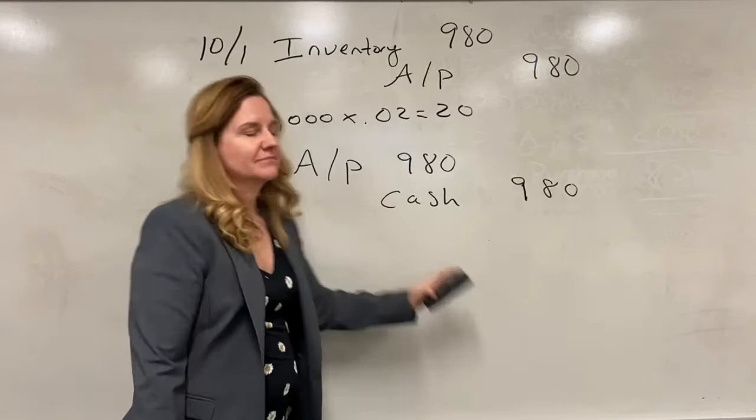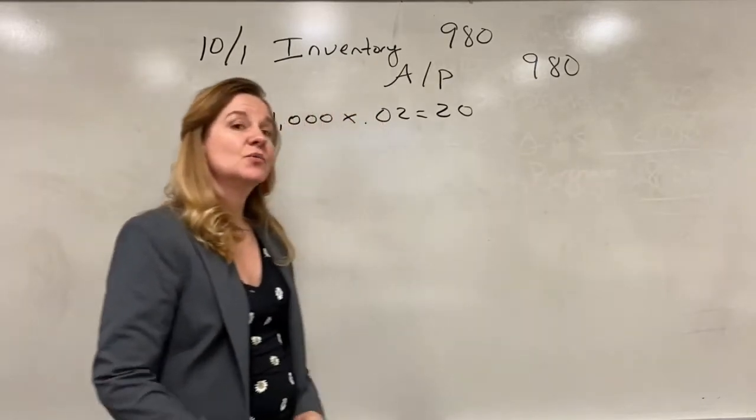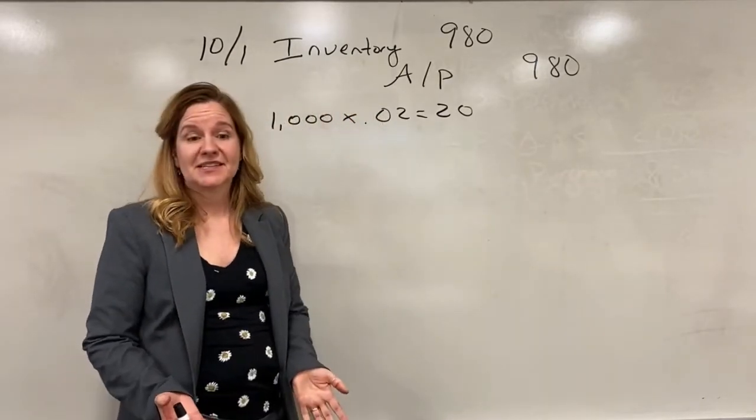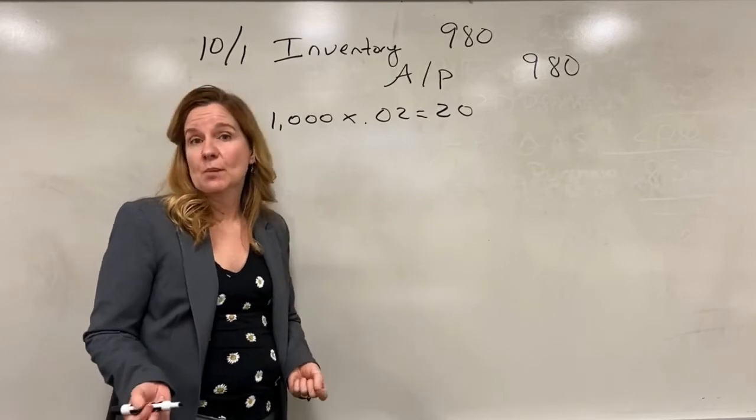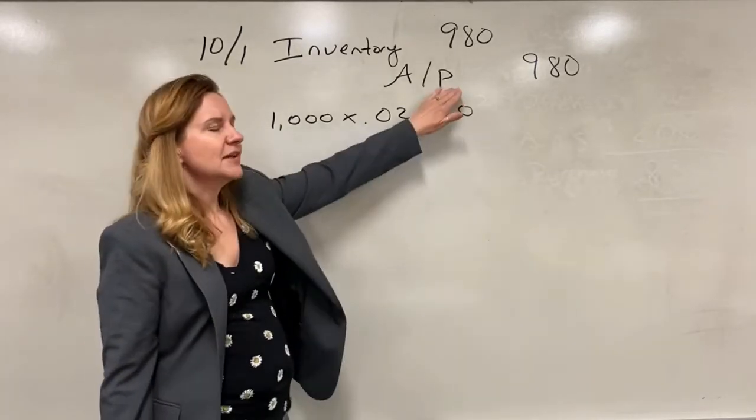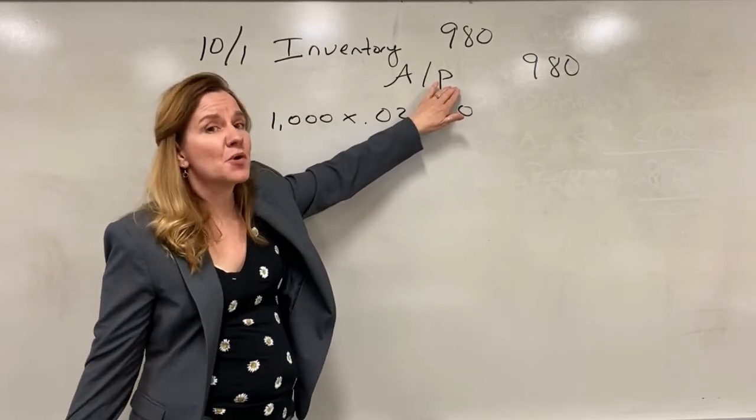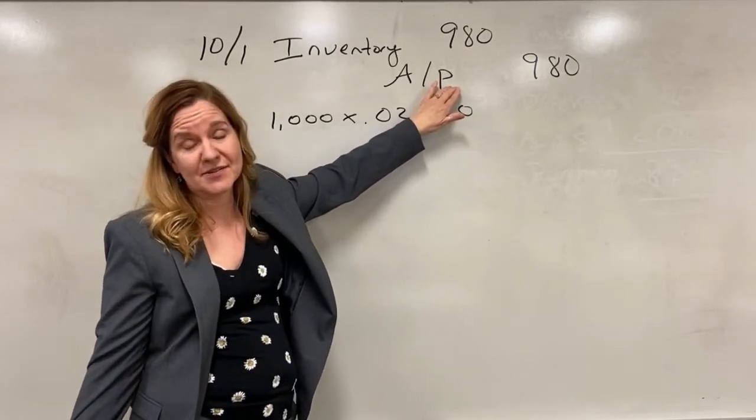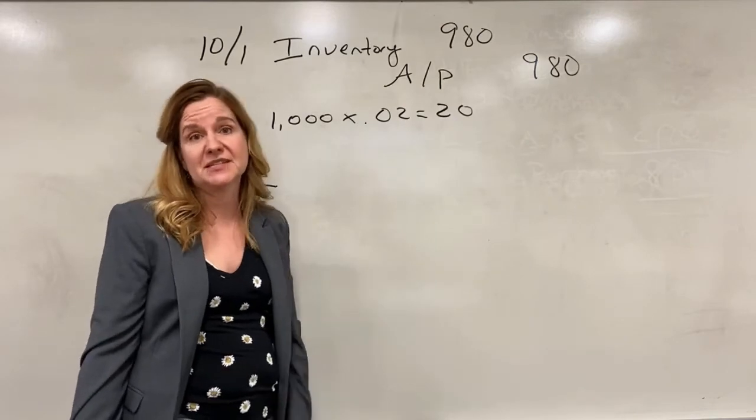Now I'm going to erase that and we're going to assume we didn't take the discount. Instead we paid on October 25th. Now our accounts payable has 980 in it but we're going to have to pay more than that. We're going to have to pay the full 1,000 because we did not pay within the ten day discount period.